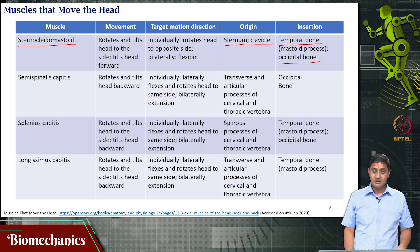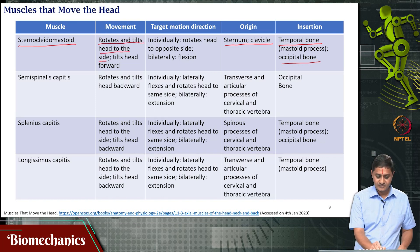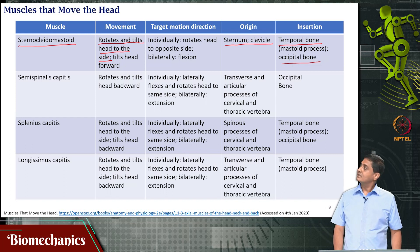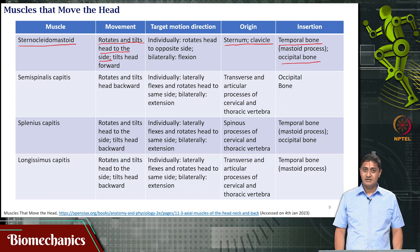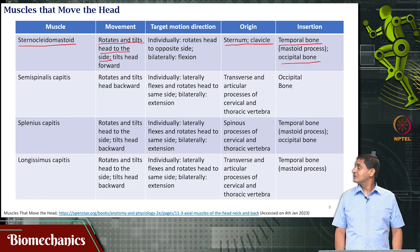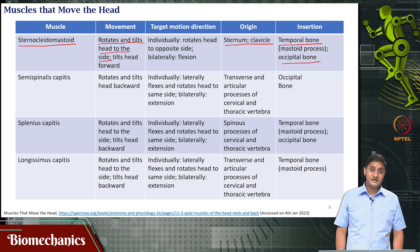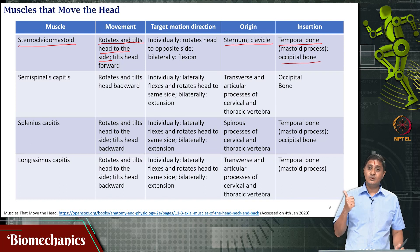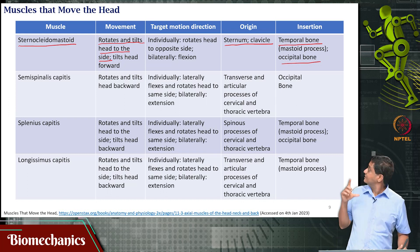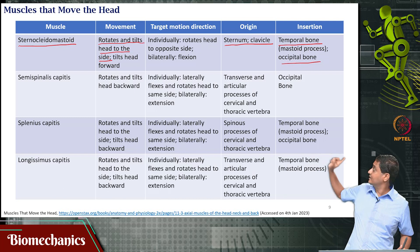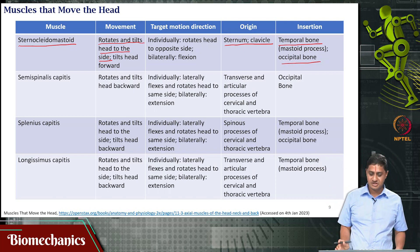The action of the sternocleidomastoid is that it rotates and tilts the head to the side — a very important function. When it contracts, you can tilt the head laterally, and you can also rotate it. For example, if you are interested in looking backward at something on your right side, your head is tilted and at the same time rotated. The sternocleidomastoid can rotate and tilt the head to the side, and also tilt the head in the forward direction.